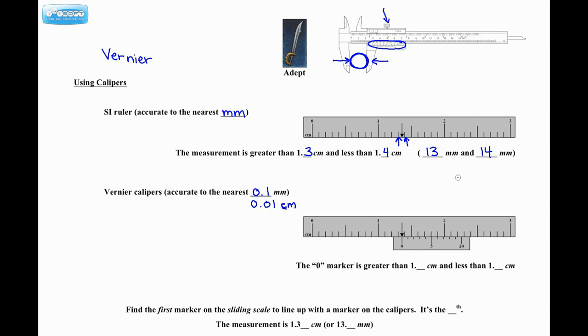Below, I actually have just the same ruler from up here, but I've attached the sliding scale. The sliding scale is always read from where the zero marker is, right here. So the zero marker is still, of course, greater than 1.3 centimeters and less than 1.4 centimeters. We know that just by estimating it. But how do we get the last digit? What you want to do is find the first marker on the sliding scale, so that's this piece right down here, to line up with a marker on the calipers. So the calipers up here, the big part. So let's look, where does it first line up?